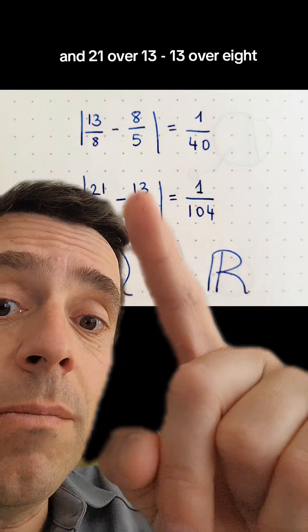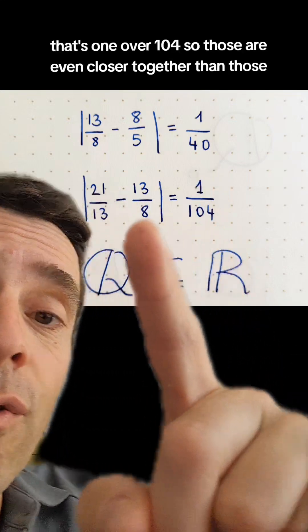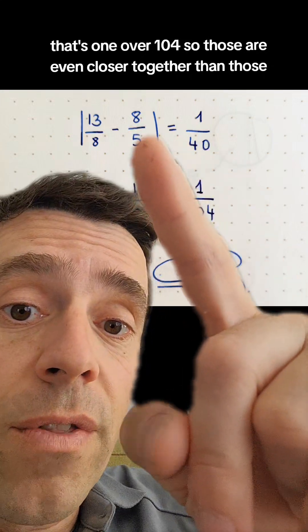And 21 over 13 minus 13 over 8, we take the absolute value, that's 1 over 104, so those are even closer together than those.